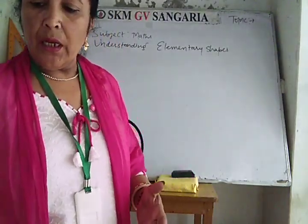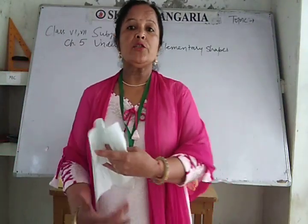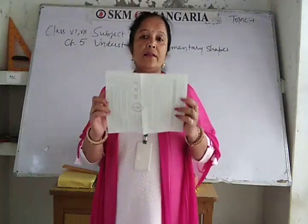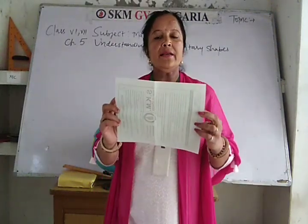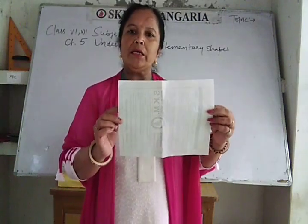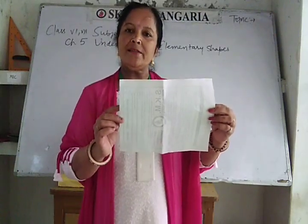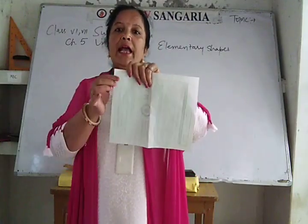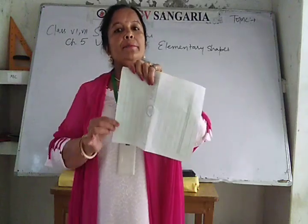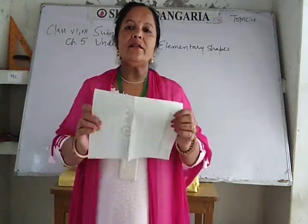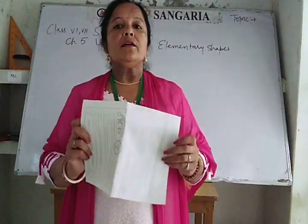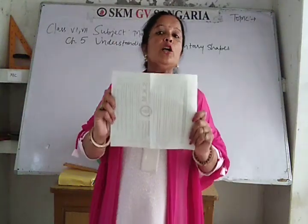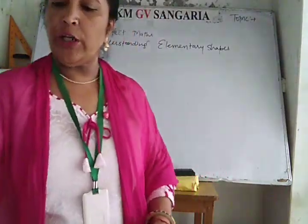I think you have seen this page of your notebook. Have you seen this page of your notebook? Is this 2D or 3D? It is 2D because it has length and breadth only. So a rectangle, square — these will be called 2D shapes.